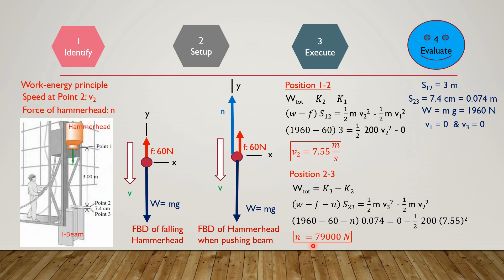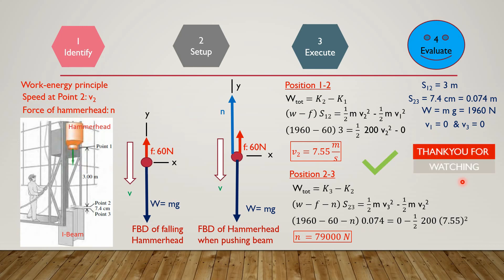The fourth step is to evaluate. When the hammerhead touches the I-beam, the normal reaction is 79,000 Newtons. The downward force the hammerhead exerts on the I-beam has the same magnitude of 79,000 Newtons, which is more than 40 times the weight of the hammerhead. This confirms our result is reasonable. Thank you very much for watching this video.